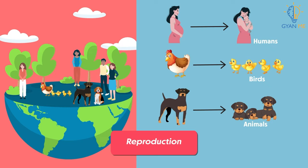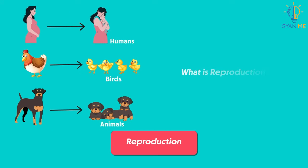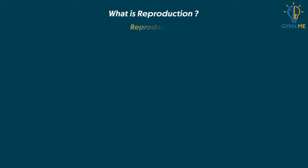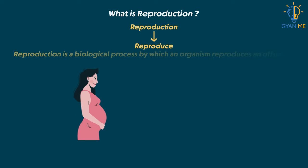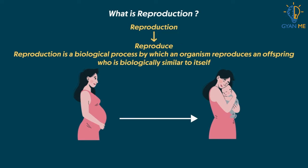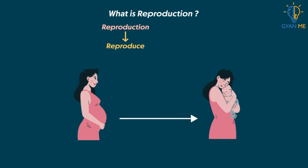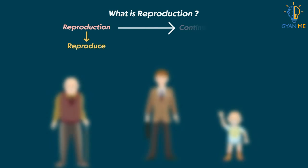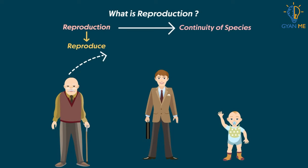Let me ask you some basic questions. What is Reproduction? And why do organisms need to reproduce? Let us answer the first question. Reproduction means to reproduce — it is very evident. Reproduction is a biological process by which an organism reproduces an offspring who is biologically similar to itself. Reproduction enables and ensures the continuity of species generation after generation. Reproduction is the main feature of life on earth for its existence.